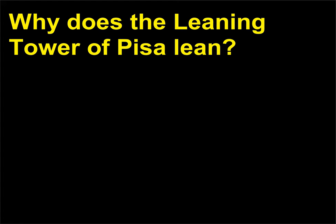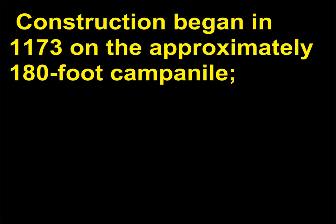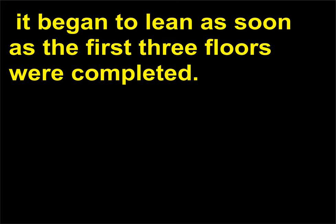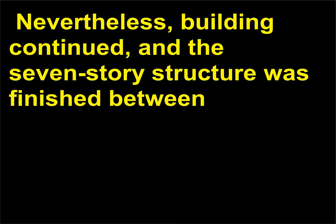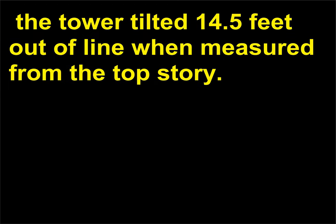Why does the Leaning Tower of Pisa lean? The famous bell tower in Pisa, in northwestern Italy, leans because of the unstable soil on which it was built. Construction began in 1173 on the approximately 180-foot campanile. It began to lean as soon as the first three floors were completed. Nevertheless, building continued, and the seven-story structure was finished between 1360 and 1370. Leaning a bit more each year, by the time it was closed for repairs in 1990, the tower tilted 14.5 feet out of line when measured from the top story.